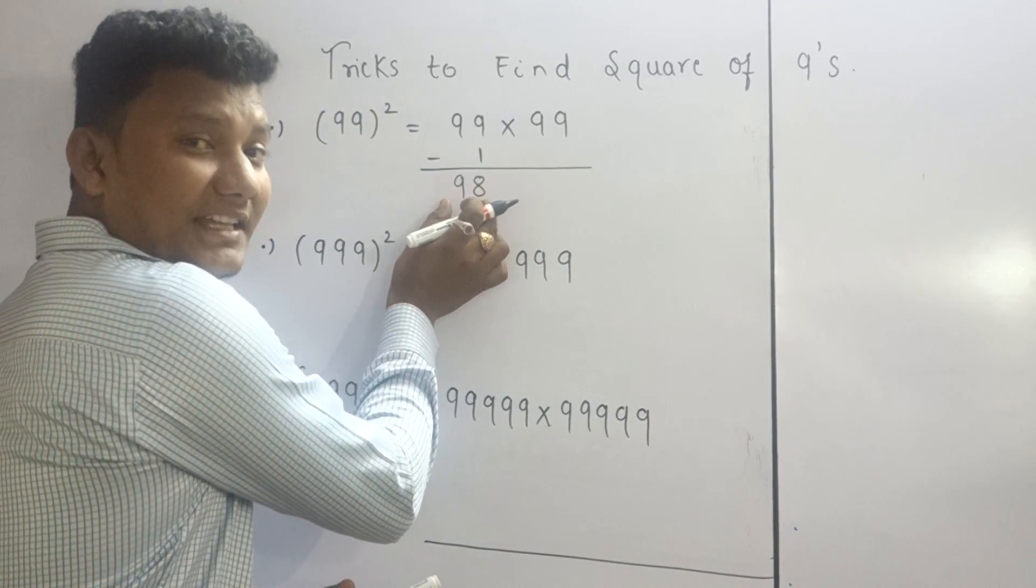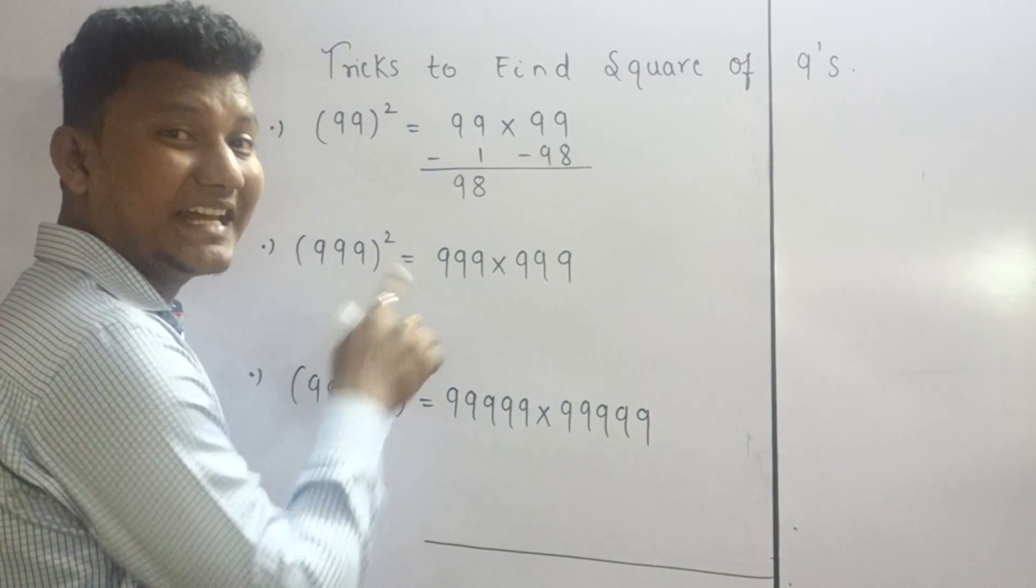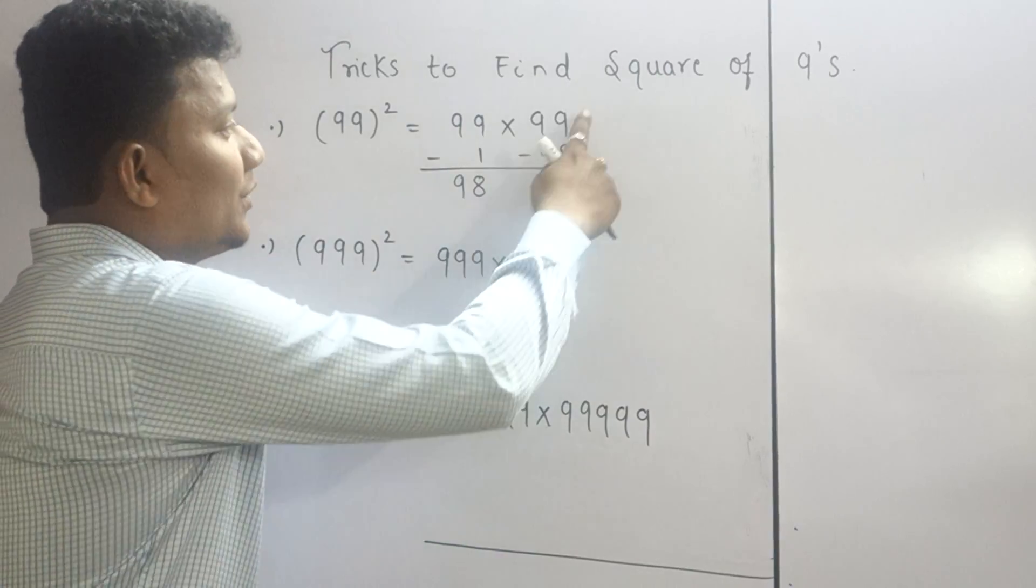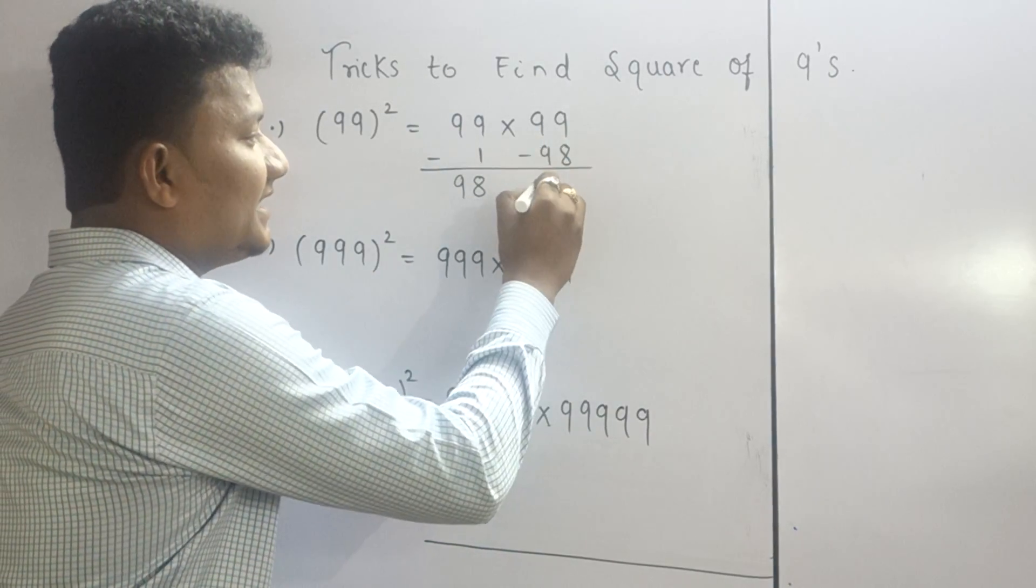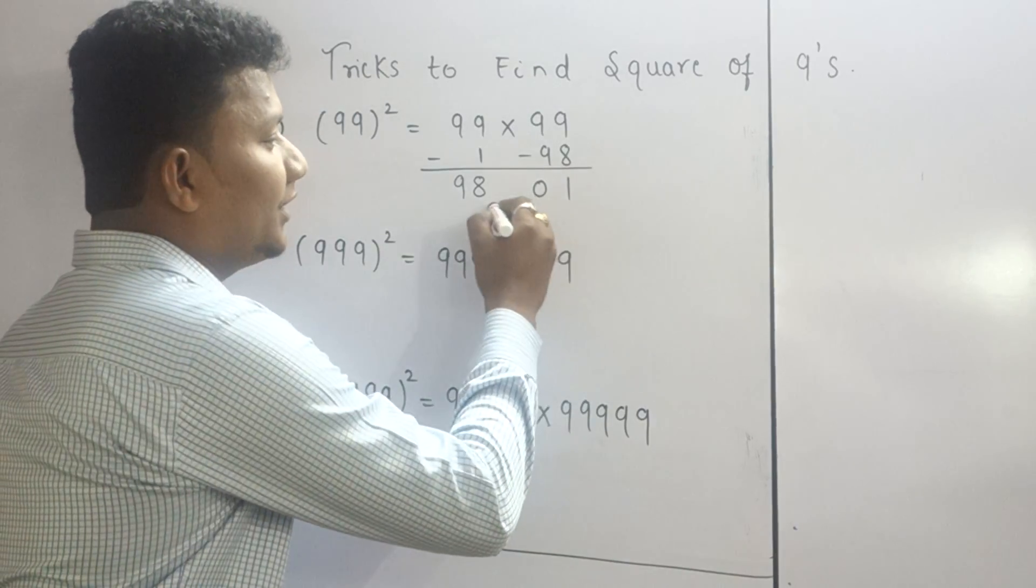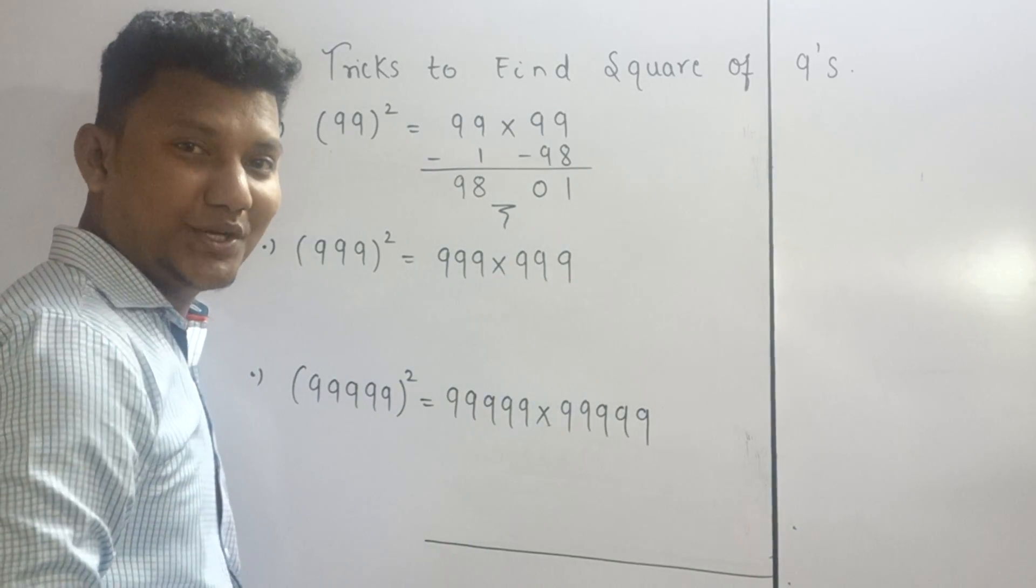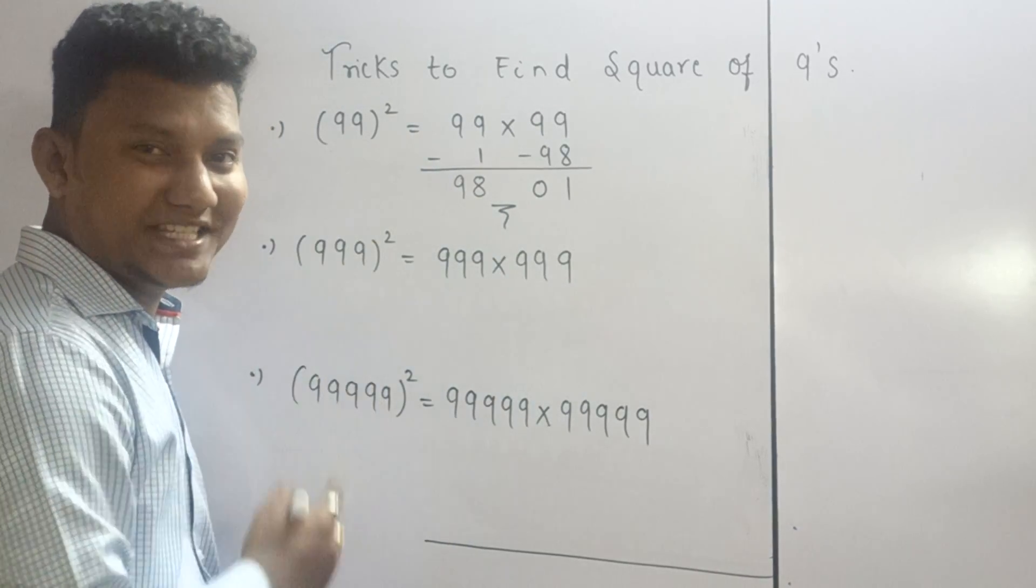Now take this 98 and subtract with the second section. The second is 99. So 99 minus 98, that is 0, and 9 minus 8 is 1. That's it. You got the answer. 99 square is 9801. I hope you understood the first example. Move on to the second one.